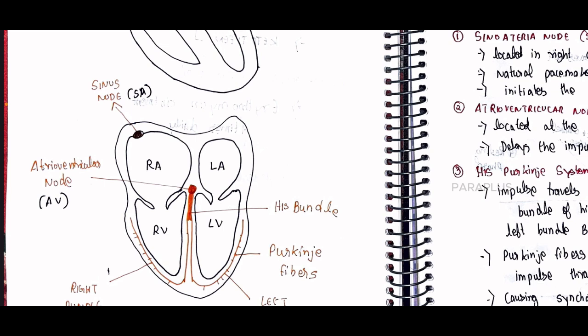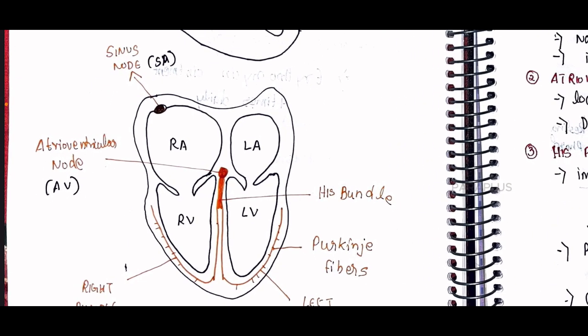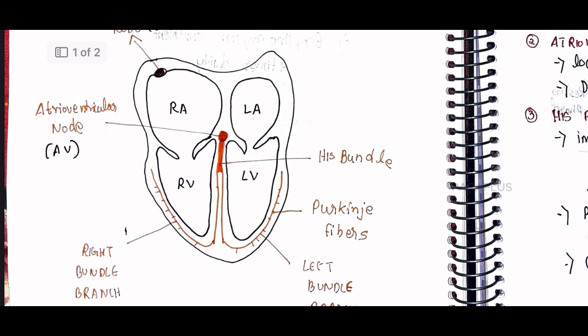That is the starting point — the heartbeat starts here. The electric signal from the SA node travels to the AV node. At this node, the signal is received. Here is the second node, located at the junction of the two atria and ventricles. This is the impulse. The impulse is divided and if we have a signal, it is divided by two, leading to contraction.